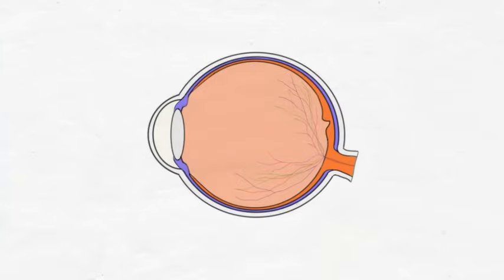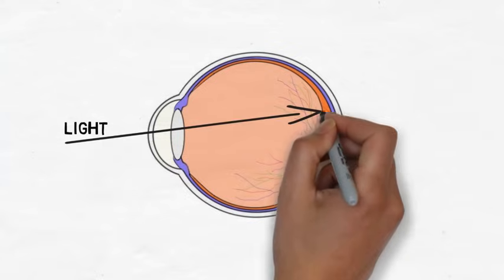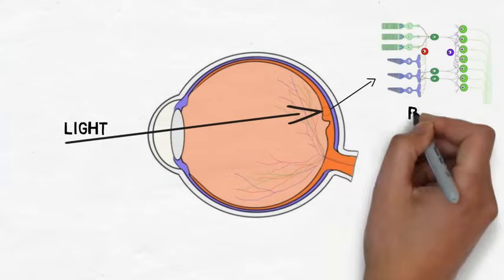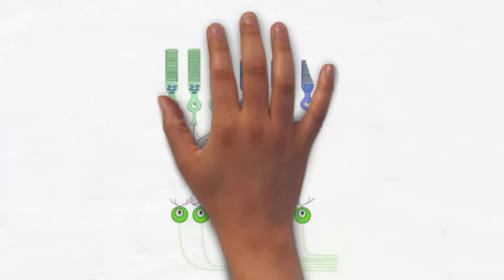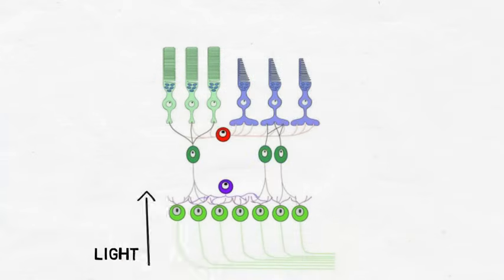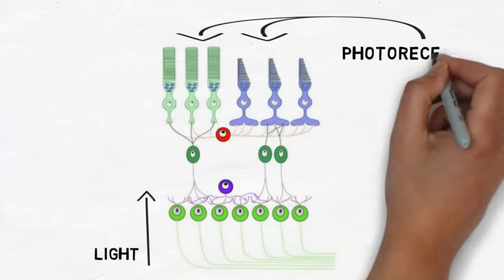The retina contains the neural component of the eye. When light reaches the back of the eye, it enters the cellular layers of the retina. The cells of the retina that detect and respond to light, known as photoreceptors, are located at the very back of the retina.